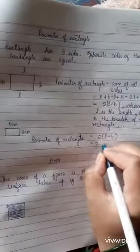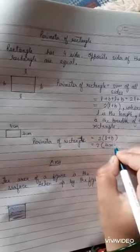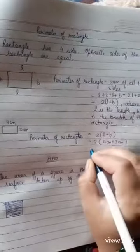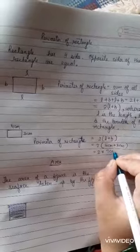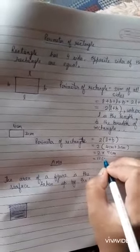Because opposite sides are equal means lengths are equal and breadths are equal and it is coming 2 times. So 2, we will find the sum 4 cm plus 3 cm. That is 2 multiplied by (4 plus 3),